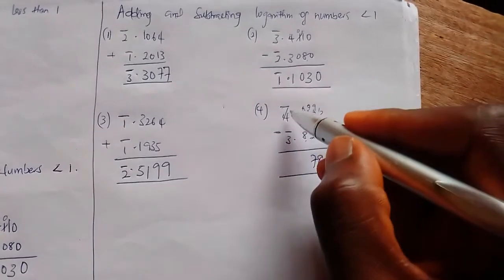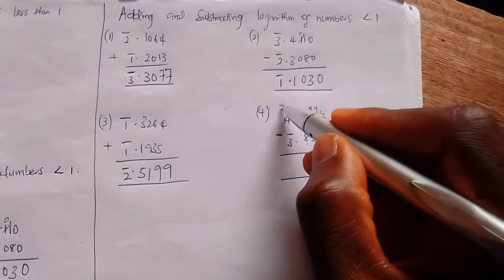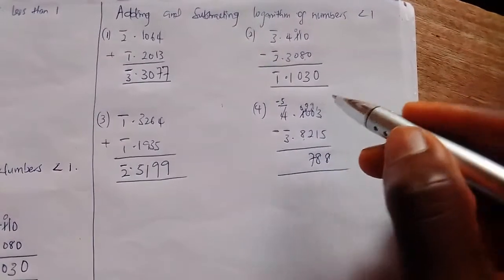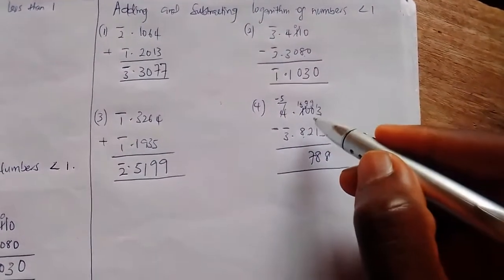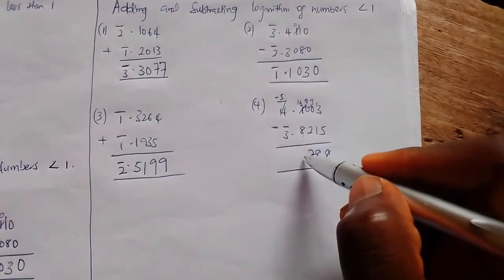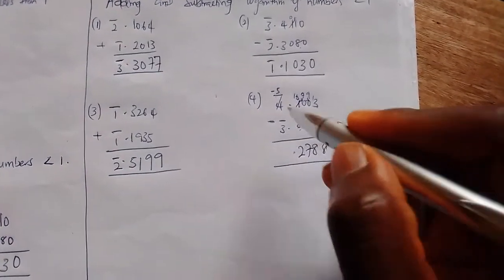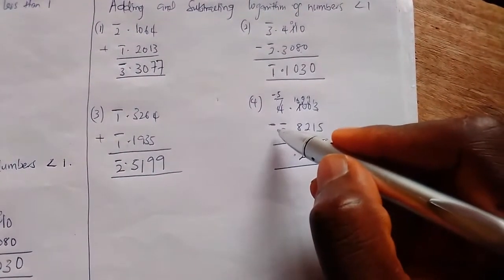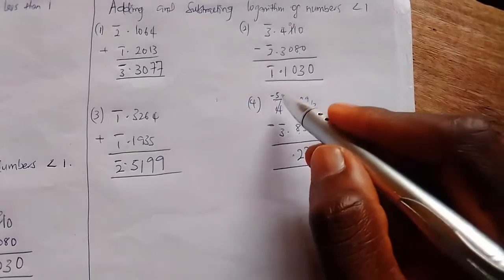Or bar five. Now that becomes one here. Ten minus eight gives us two. Bar five minus bar three, that's minus five plus three, that's minus two or bar two.